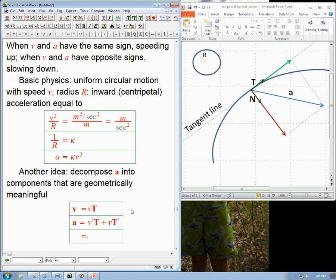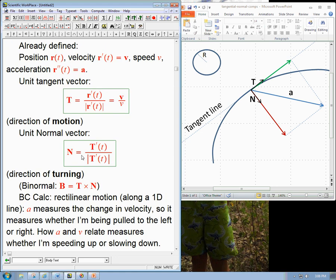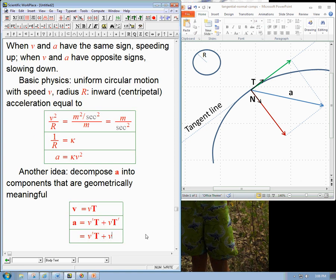Now what about this guy, v T prime? Does that mean that the magnitude of this guy is v? No, because T prime is not a unit vector. First we have to make it into a unit vector. So T prime, what was the relationship here? T prime is just N times the magnitude of T prime. So this is N, boldface, and then times the magnitude of T prime.